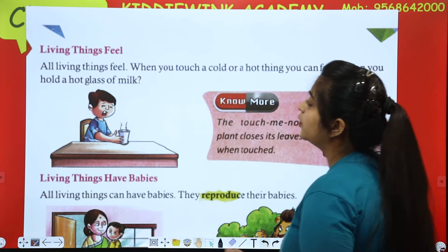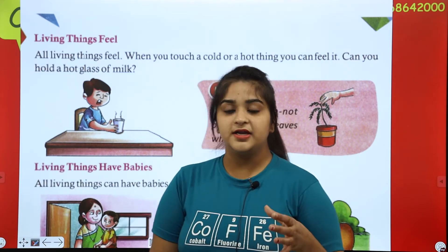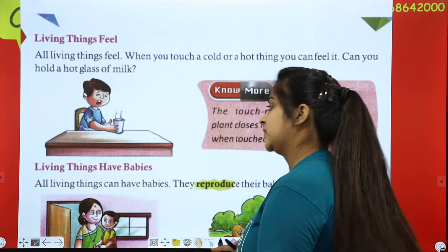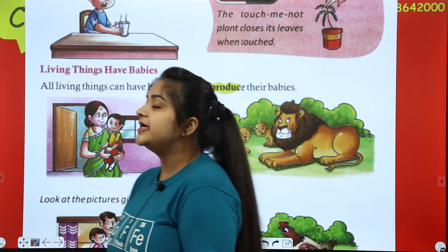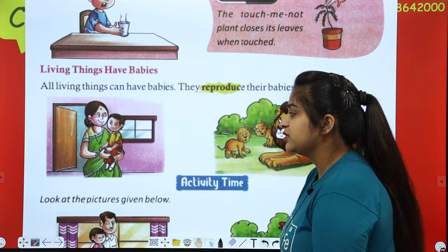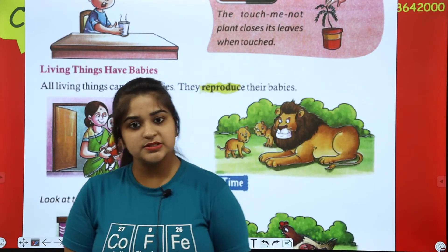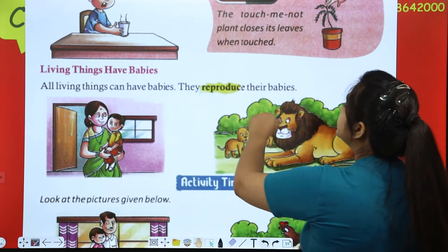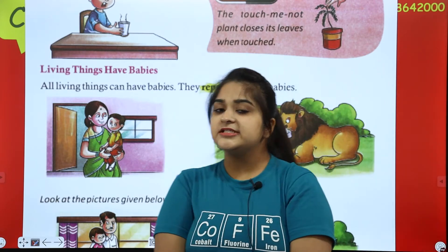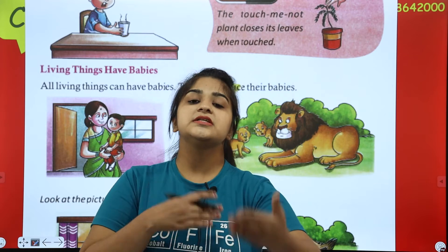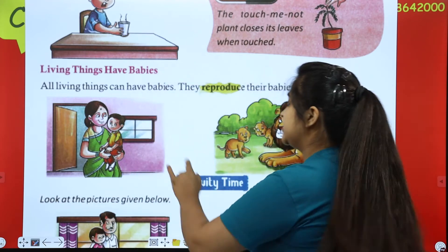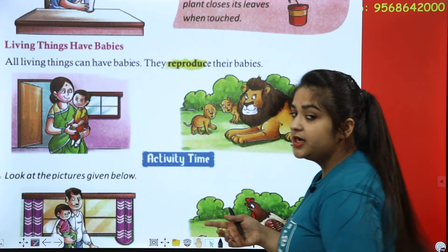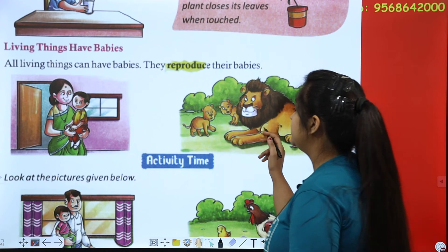Can you hold a hot glass of milk or touch hot water? No, otherwise we will burn our hands. The sixth feature: living things have babies. All living things can have babies — they reproduce. Like your mother gave you birth. Animals too — look, this is a lion and its cub.